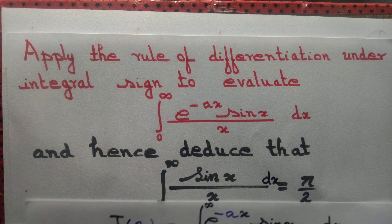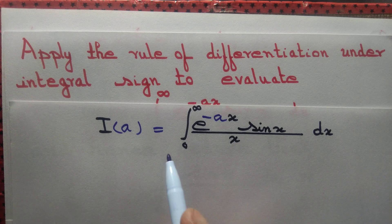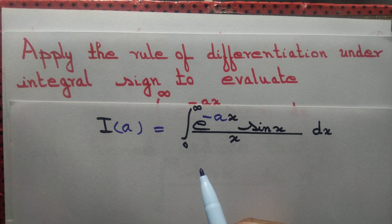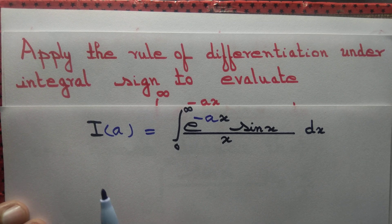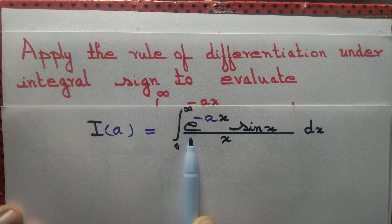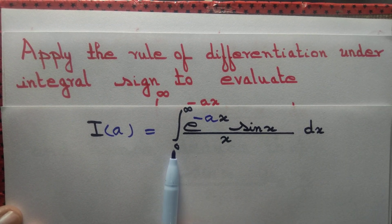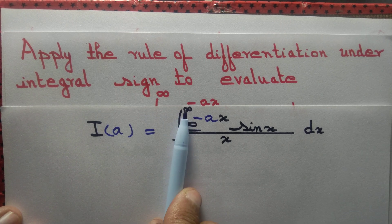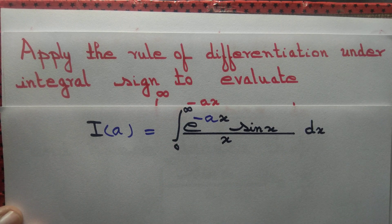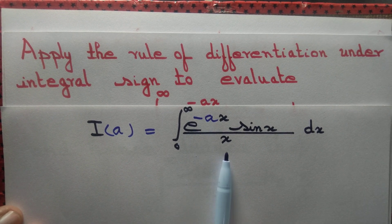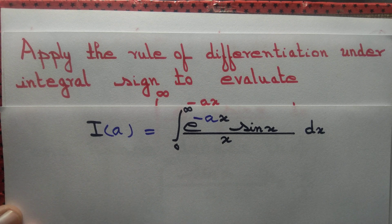We start by taking I(a) equal to ∫₀^∞ e^(-ax) sin(x)/x dx. Observe that if you integrate e^(-ax) sin(x)/x and put x equal to 0 and x equal to infinity, you will have an expression involving a only. That's why we take I(a) equal to this.